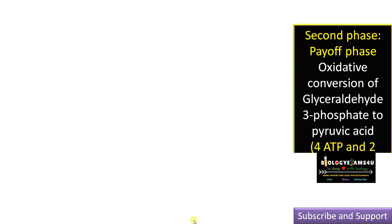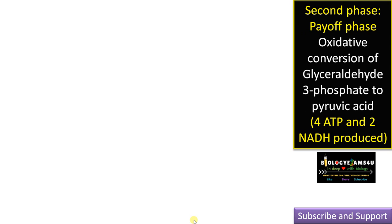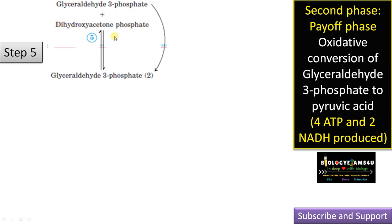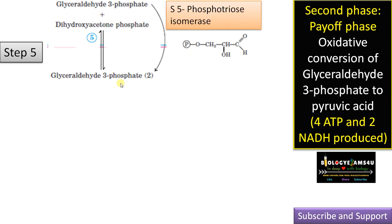Moving into the second phase, called the payoff phase, glyceraldehyde-3-phosphate is converted to 2 pyruvic acid molecules with the production of 4 ATP and 2 NADH. In step 5, dihydroxyacetone phosphate is converted to glyceraldehyde-3-phosphate; it is a triose, so the enzyme is triose phosphate isomerase. From this point, two glyceraldehyde-3-phosphate molecules are present, so all reactions occur twice.